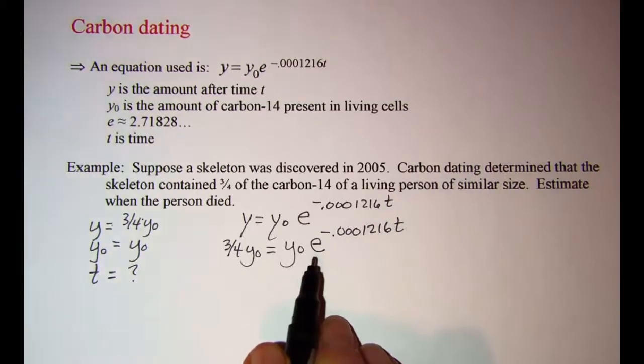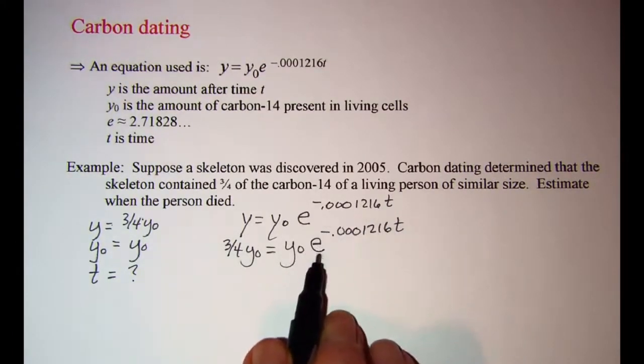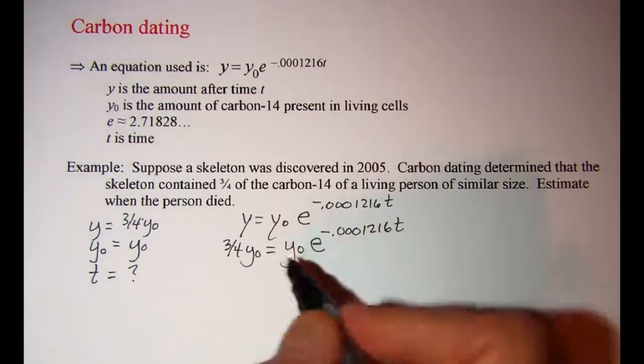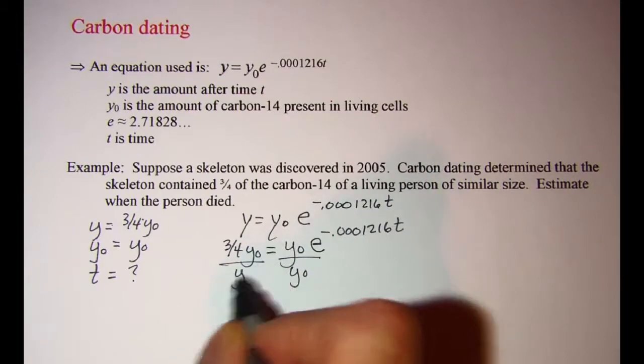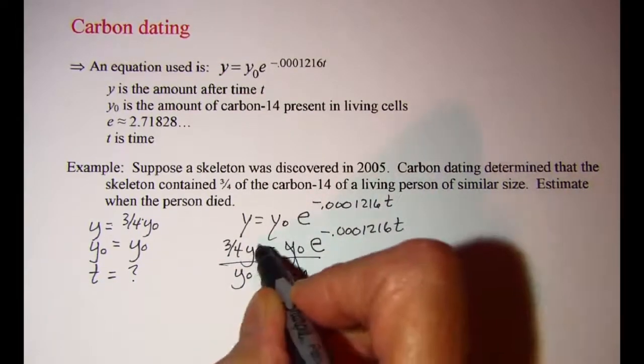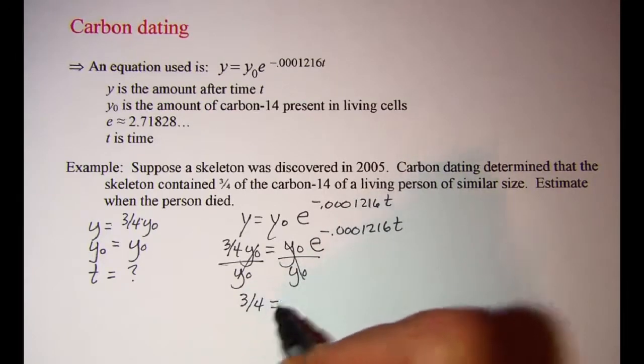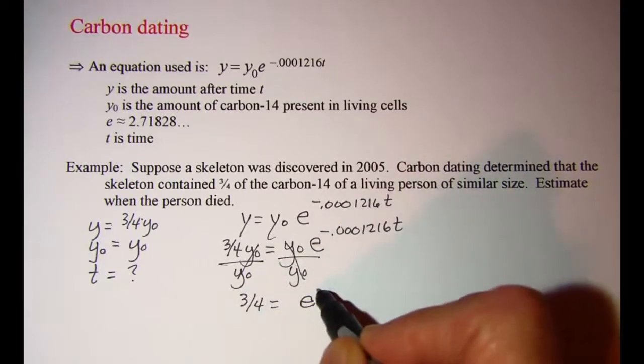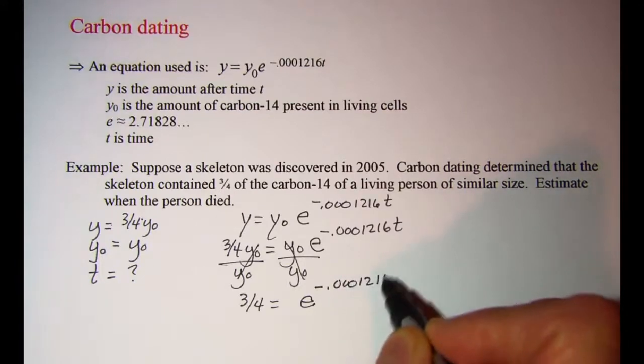We first want to isolate this factor that has the variable in it. So we are going to divide both sides by y sub zero. And we see then that three-fourths is equal to e to the negative 0.0001216t.